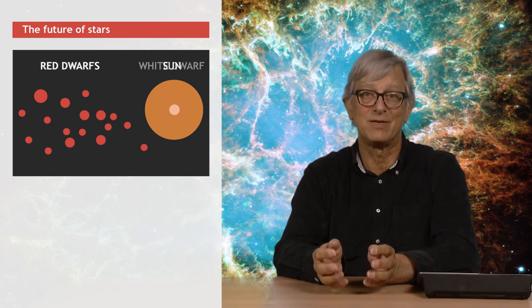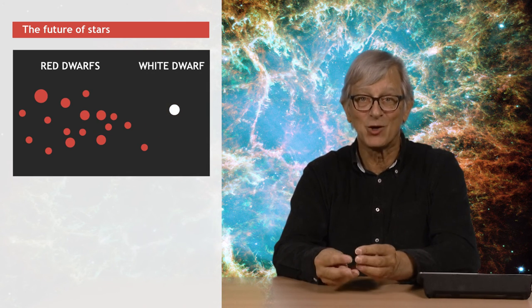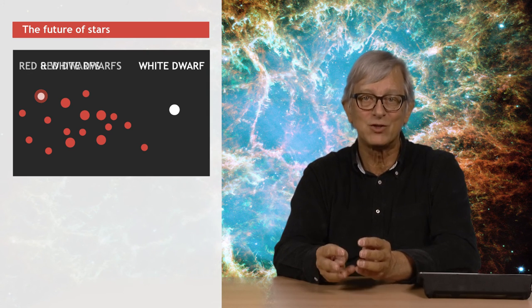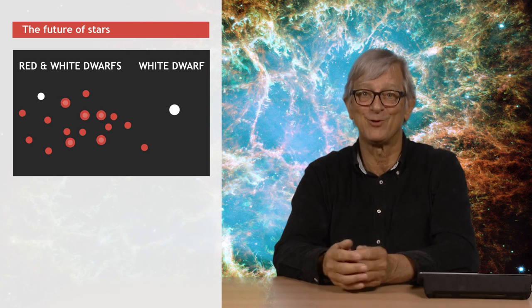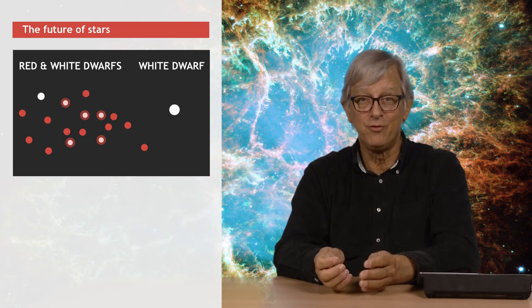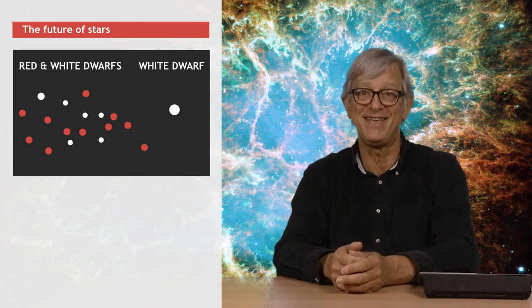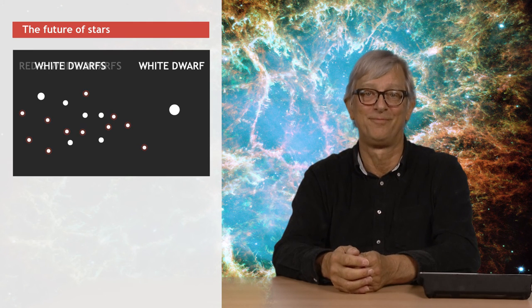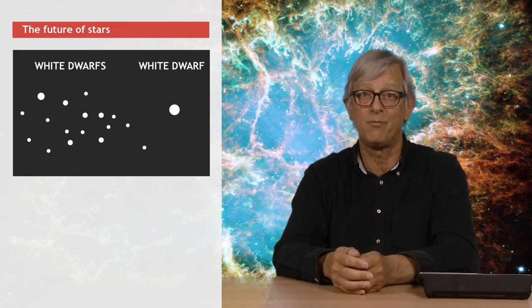If you take a star ten times as small as the sun, it has ten times less hydrogen, but these are really tiny, dim red stars. They burn their fuel extremely slowly. So, they live much longer than the sun, a thousand billion years or so. So, in our universe of 13.7 billion years old, none of these stars have died yet. That's something for the deep, deep future. There are lots of these stars, and we predict that in the end, they're all going to end up as white dwarfs.